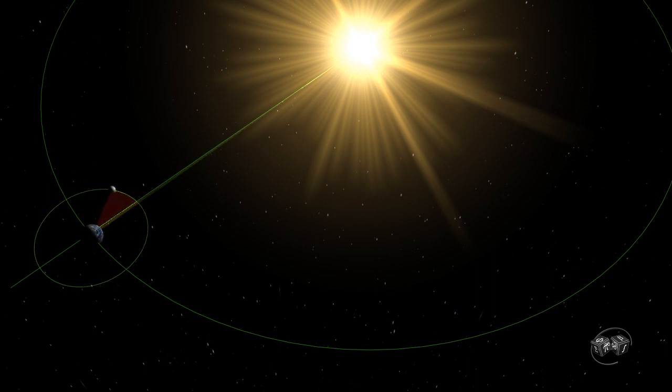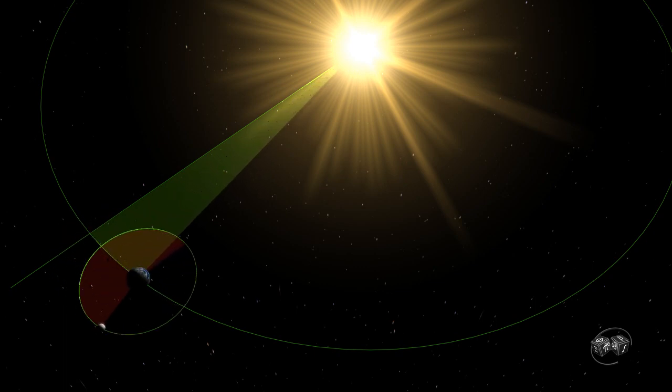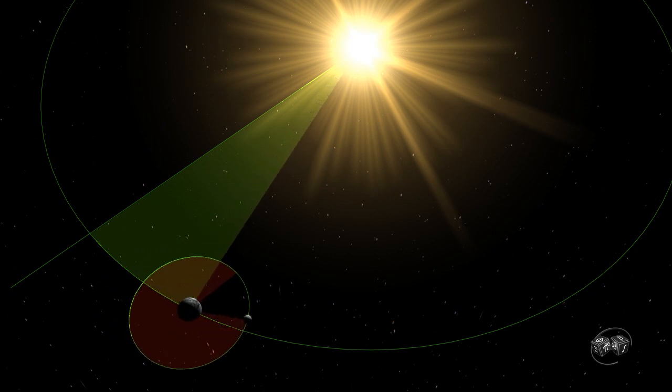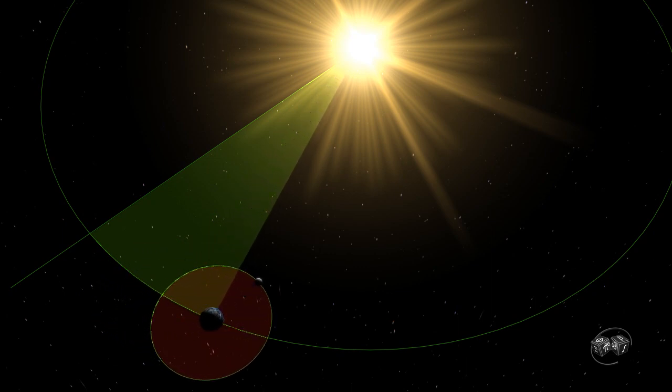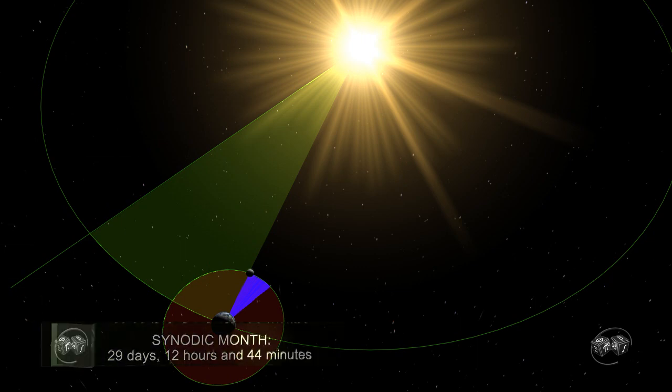But while the Moon orbits the Earth, the Earth also orbits the Sun, giving rise to the Moon scrolling 360 degrees before the three bodies being realigned. The Moon must travel more than 360 degrees so that the three bodies line up again and so fulfill the cycle of the phases of the Moon. This cycle is called the synodic month, equivalent to 29 days, 12 hours and 44 minutes.